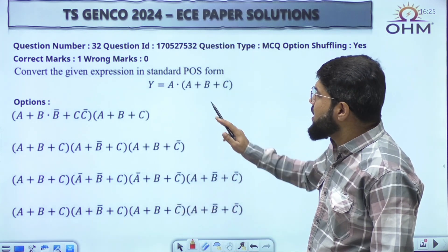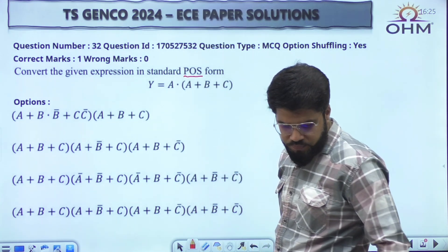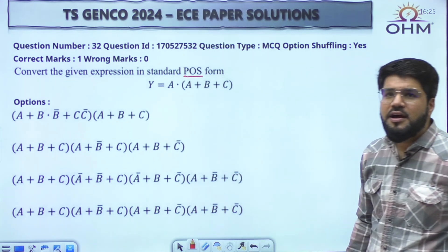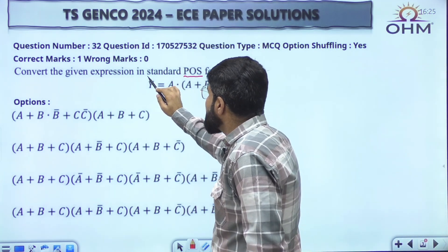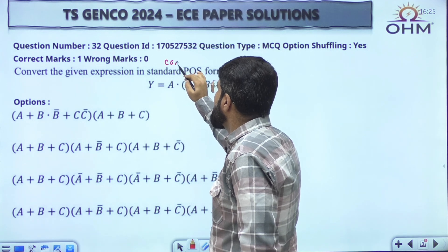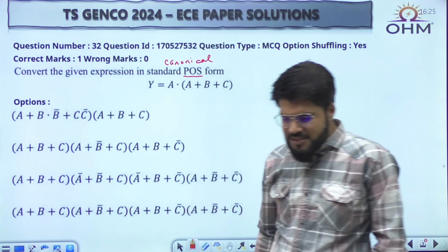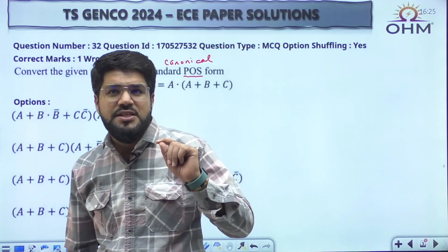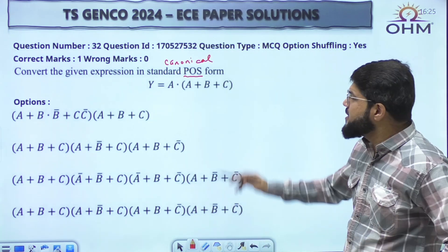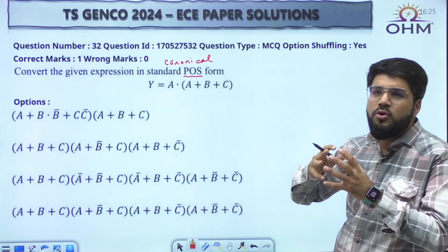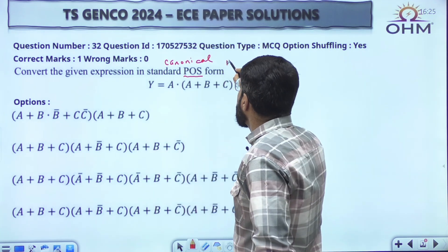Moving to the next question — a very basic question, but the correct language is not used, although you can match from the options. 'Convert the given expression into POS form' — product of sums form. Now, not in standard but in canonical POS form. Standard is the reduced/minimized form. The question should say 'convert to canonical POS form.' Canonical means in max term form.